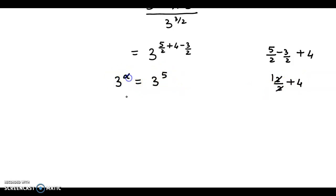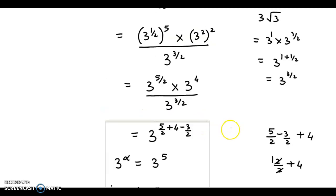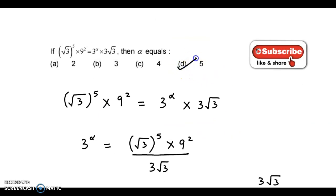Now if we compare both the sides, we could say the value of alpha is equal to 5. So the correct answer is option D.